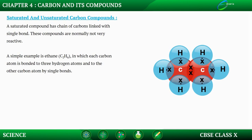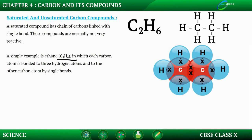A very common example of a saturated compound is ethane. Ethane has a molecular formula of C2H6. As you can see in the diagram, it has two carbon atoms connected by a single bond, and then there are six hydrogen atoms — three hydrogen atoms on each carbon.